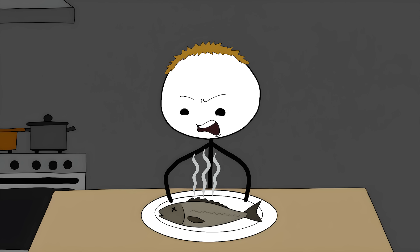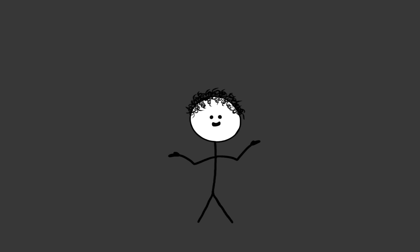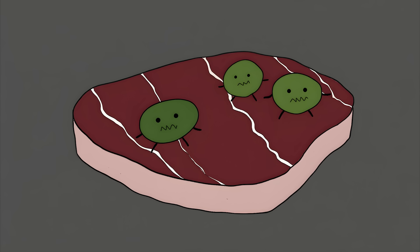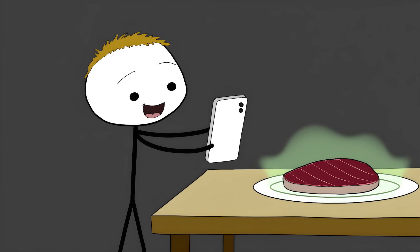Usually, when fish goes bad, it turns brown or gray. That's nature's warning sign. But with CO-treated fish, you lose that sign. The fish could be crawling with bacteria or loaded with histamines, but it'll still look Instagram-worthy.